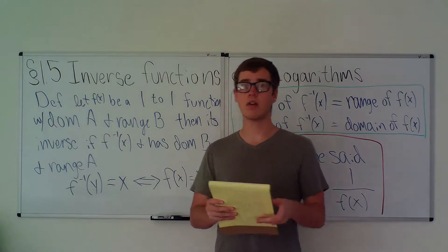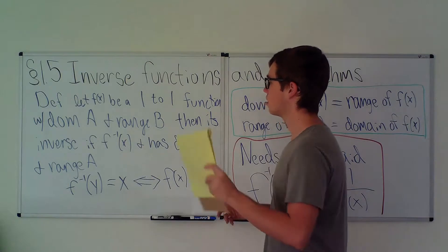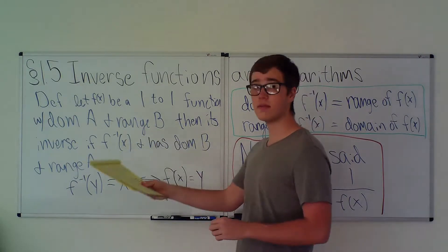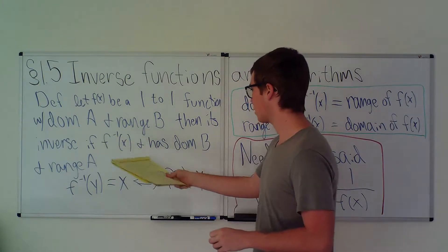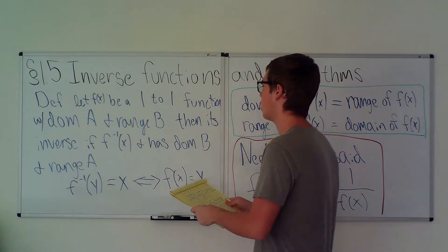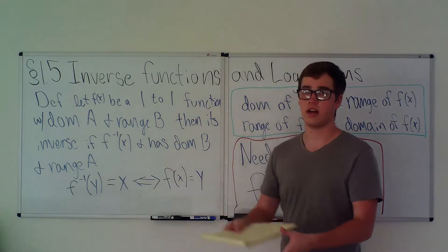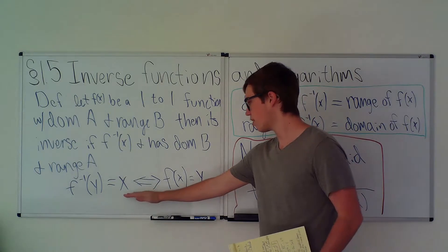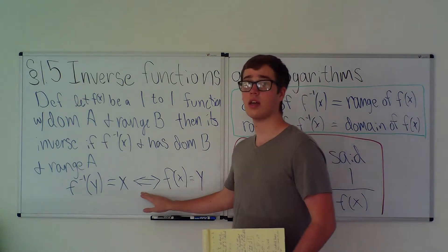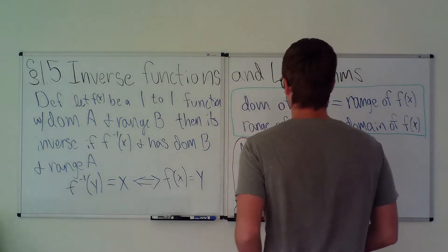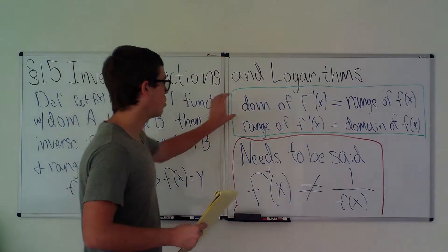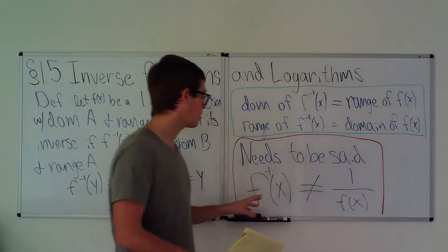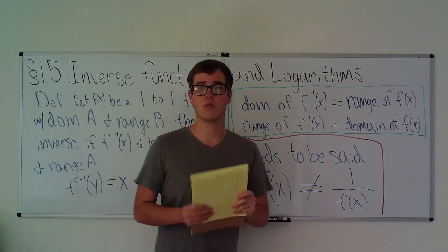Now onto inverse functions. Let f(x) be a one-to-one function with domain A and range B. Then its inverse is f⁻¹(x) and has domain B and range A. So f⁻¹(y) = x if and only if f(x) = y. The domain of f(x) equals the range of f⁻¹(x), and the range of f⁻¹(x) equals the domain of f(x). It needs to be a one-to-one function or it will not work.